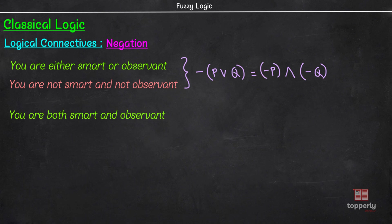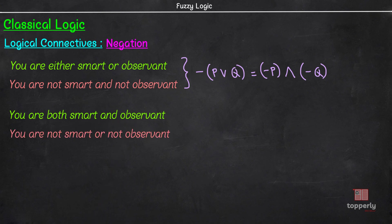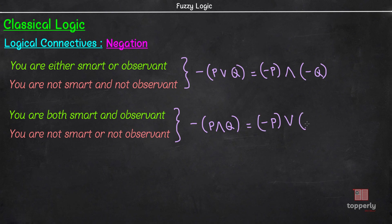Now consider another statement: 'you are both smart and observant.' Here, proposition P is 'you are smart' and proposition Q is 'you are observant.' For this statement to be false, you could be either not smart or not observant. So, the negation of this statement is 'you are not smart or not observant.' Note that with negation, AND and OR got interchanged. So, in general, we can say that for two propositions P and Q, negation of P conjunction Q is equal to negation of P disjunction negation of Q.